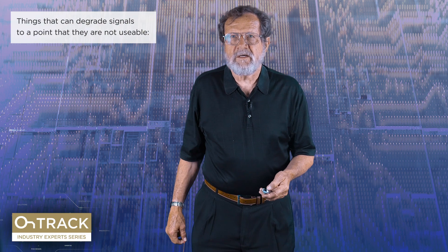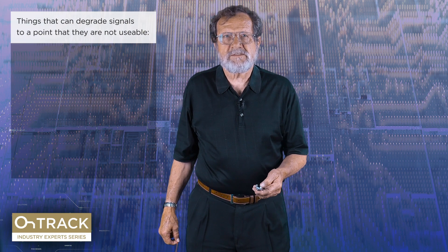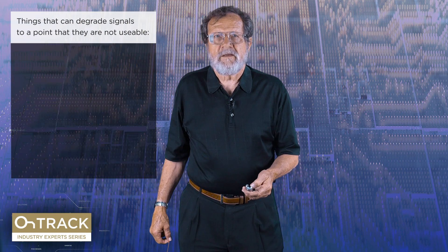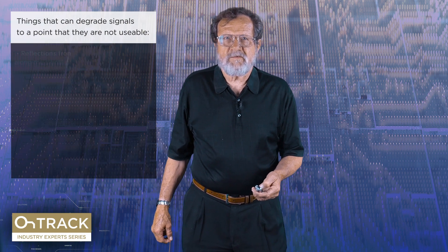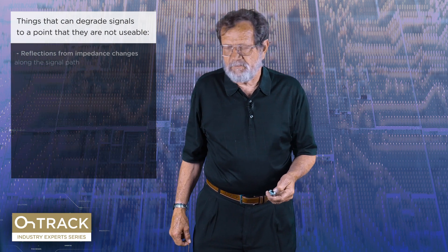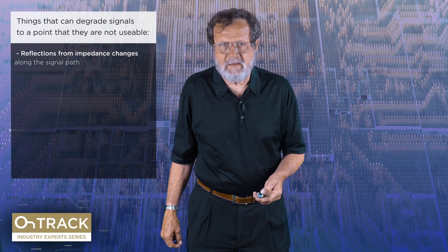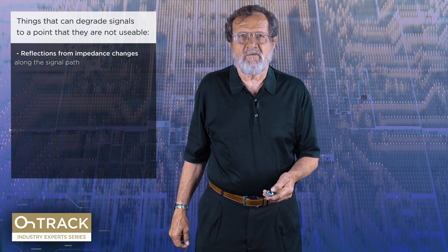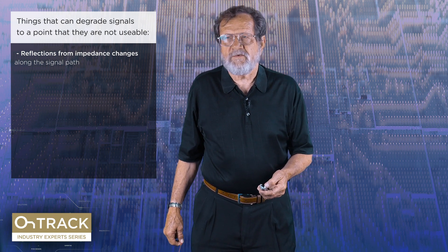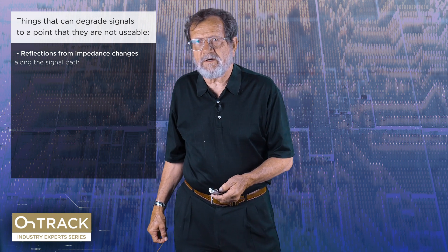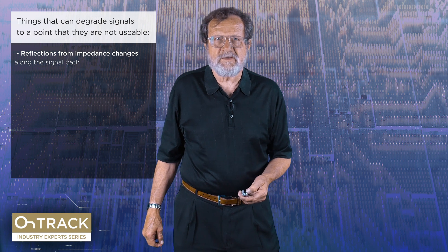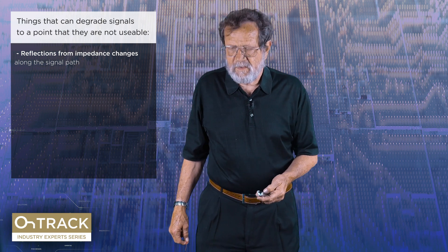Among the things that can degrade the signal along the way are reflections coming from impedance variations along the path or at the end of the path. That's usually what we start with when we go up the high-speed curve.